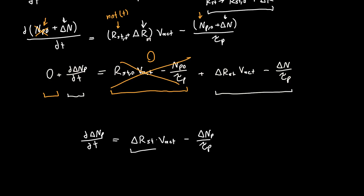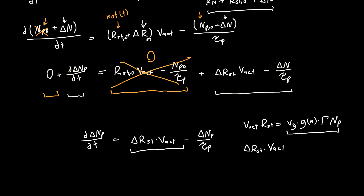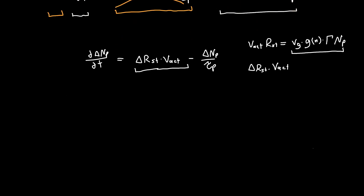We can write the stimulated emission times the active region volume as V_g times our gain — which is a function of carrier density — times our confinement factor Gamma, times the number of photons. We're looking for the delta term, so delta_R_stimulated times the active region volume. We need to plug in the expected changes on this side to figure out what delta_R_stimulated should be.